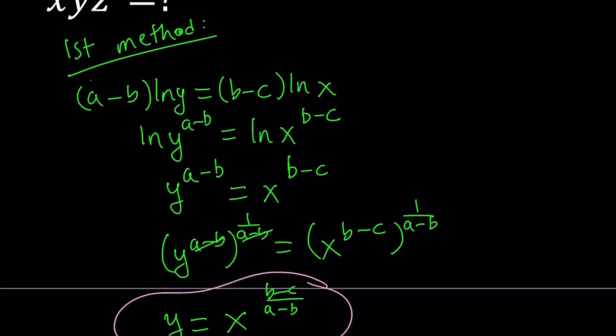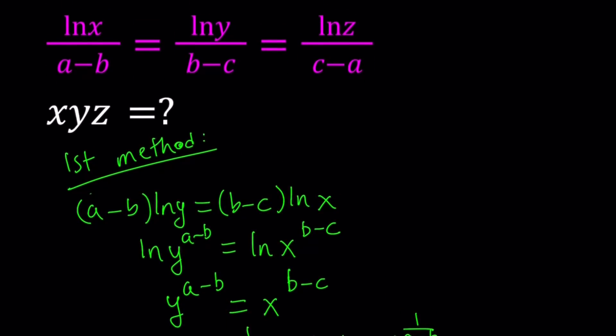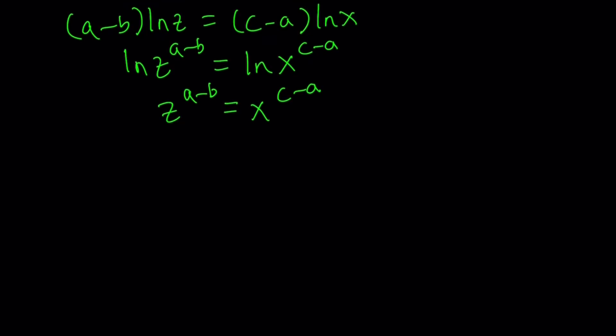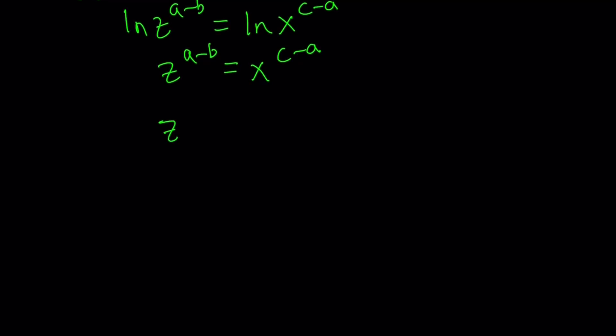And then, let's proceed with the second part. Now, we're going to go ahead and take these two together, x and z. And that's going to give us a minus b times ln z equals c minus a times ln x. And from here, we get ln z to the power a minus b equals ln x to the power c minus a. And z to the power a minus b becomes x to the power c minus a. And by raising both sides to the power 1 over a minus b, we get the following. Z is isolated and it becomes x to the power c minus a divided by a minus b.